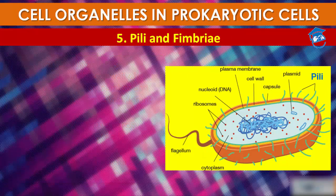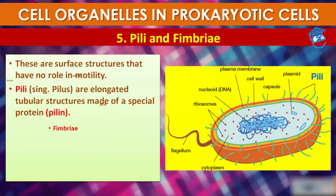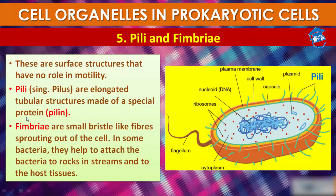Now comes pili and fimbriae. Beside flagella, pili and fimbriae are also surface structures of bacteria, but they do not play a role in motility. They are elongated tubular structures made up of a special protein called pilin.